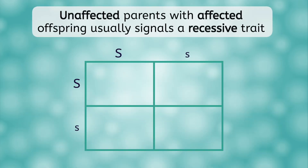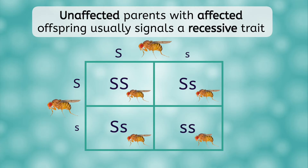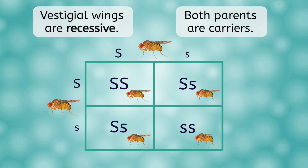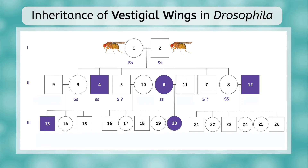To make it clear why this signals a recessive trait, let's look at a Punnett square. If both parents are heterozygous, they display the dominant phenotype of wild type wings. Their offspring could be big S, big S or big S, little s — both wild type — but there is a 1 in 4 chance their offspring will be little s, little s, which would have vestigial wings. So when two unaffected parents have affected offspring, we can generally assume the trait is recessive and both parents are carriers. We assign preliminary genotypes: the parents are heterozygous, affected offspring are homozygous recessive, and unaffected offspring are labeled big S, question mark until we have more information.